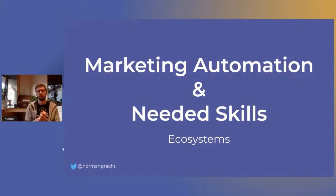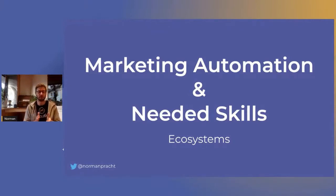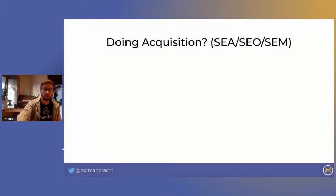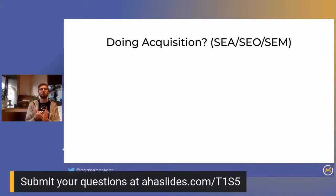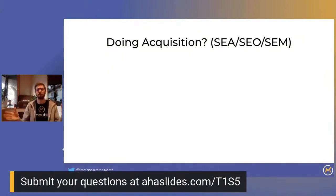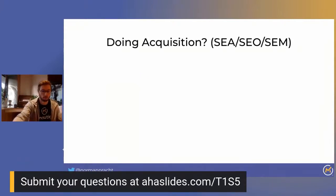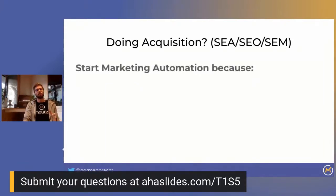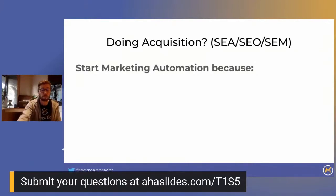Now I want to explain the different skills and ecosystem built around marketing automation. In an agency, you are often doing some acquisition — it can be ads, social, or content with SEO, whatever. If you're doing that, marketing automation must be started as soon as possible for several reasons.